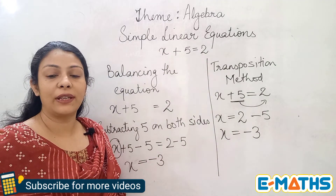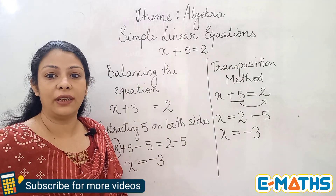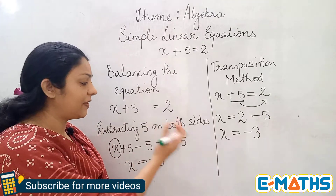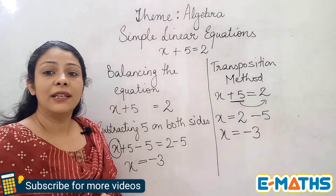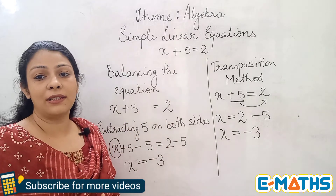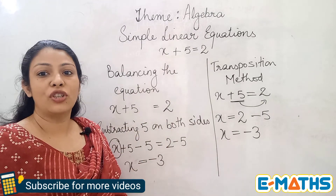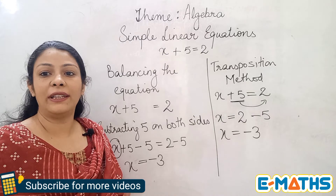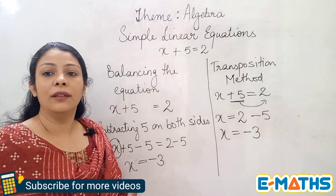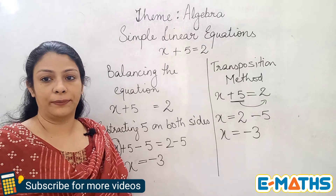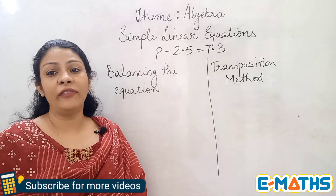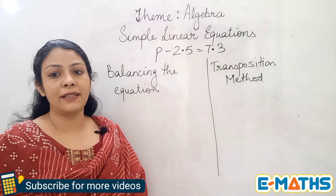So these are the two ways to solve linear equations, and as you can see, we get the same answer — minus 3 — with both methods. Whichever you find easier, you can go with it. Now I have taken another example where I've changed the sign.